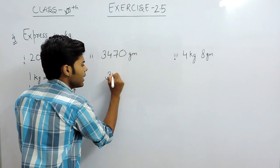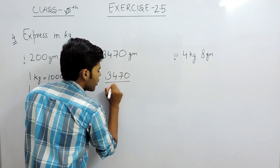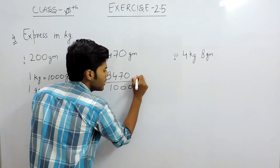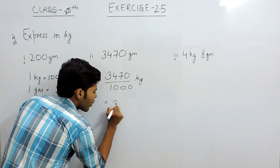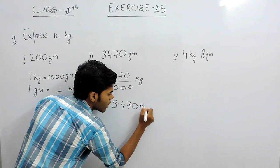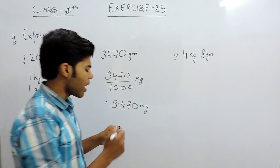Now, where also it will be 3470 upon 1000 kg and now it will be 3.470 kg. And in the last part, this is already in kgs.